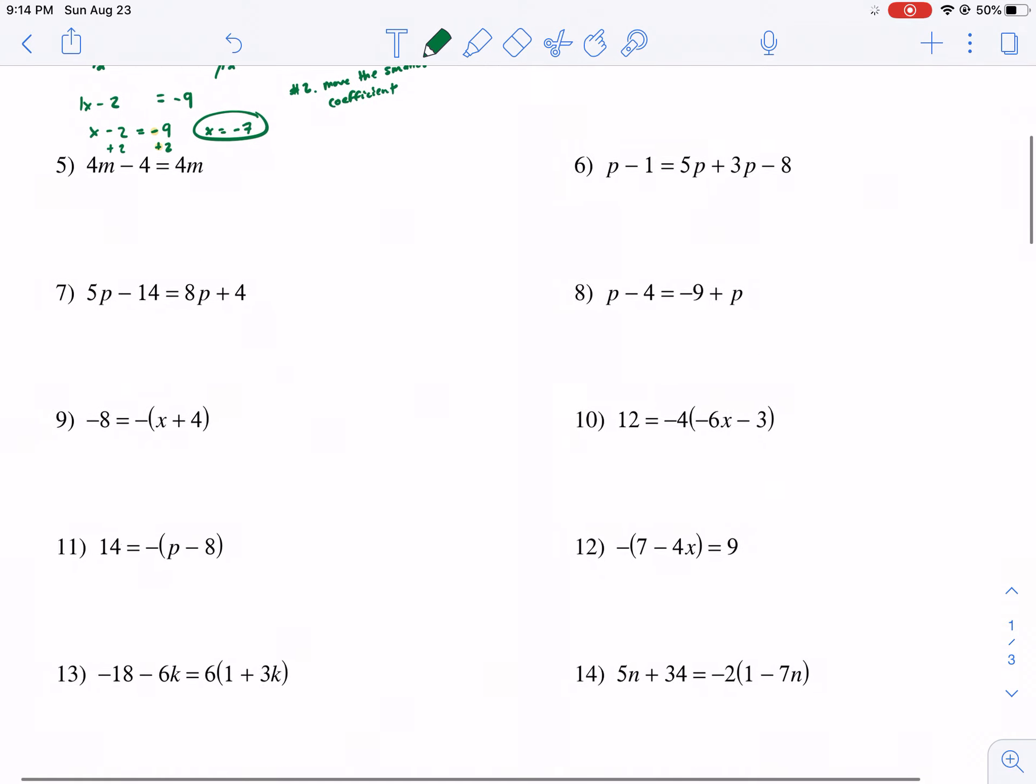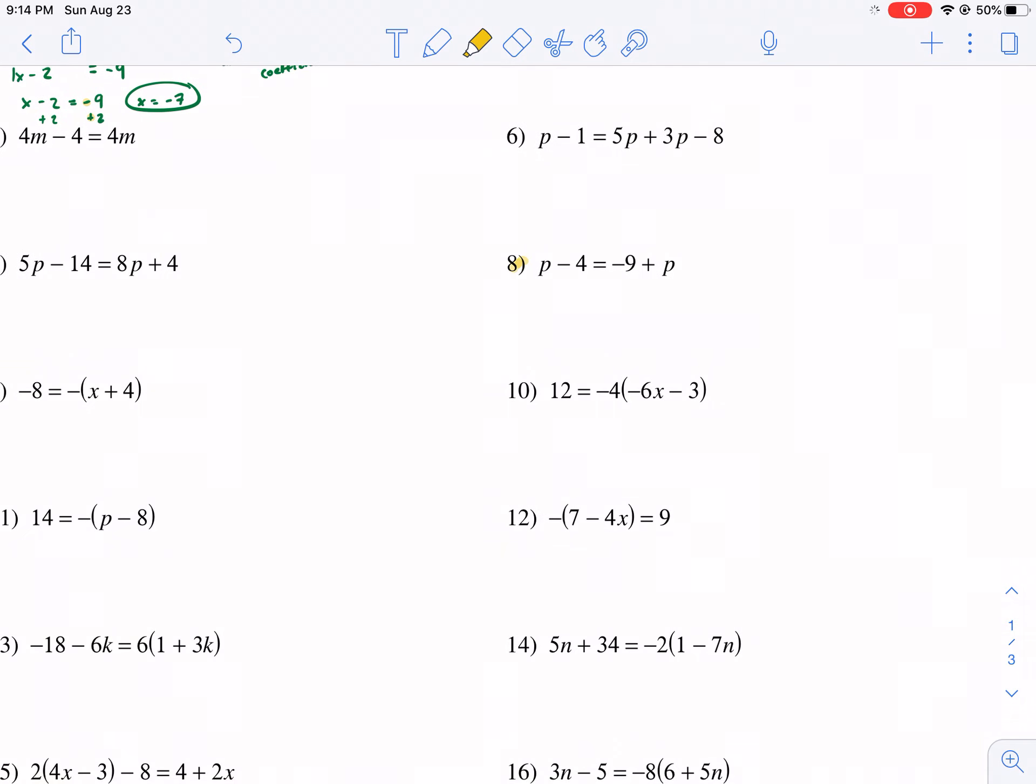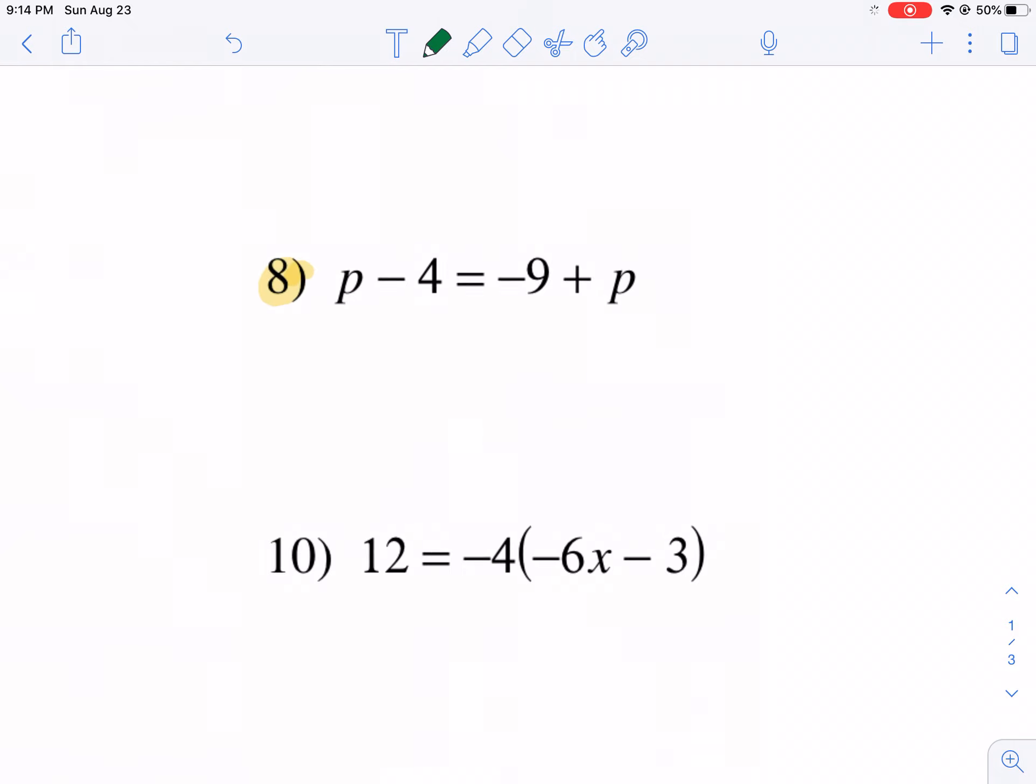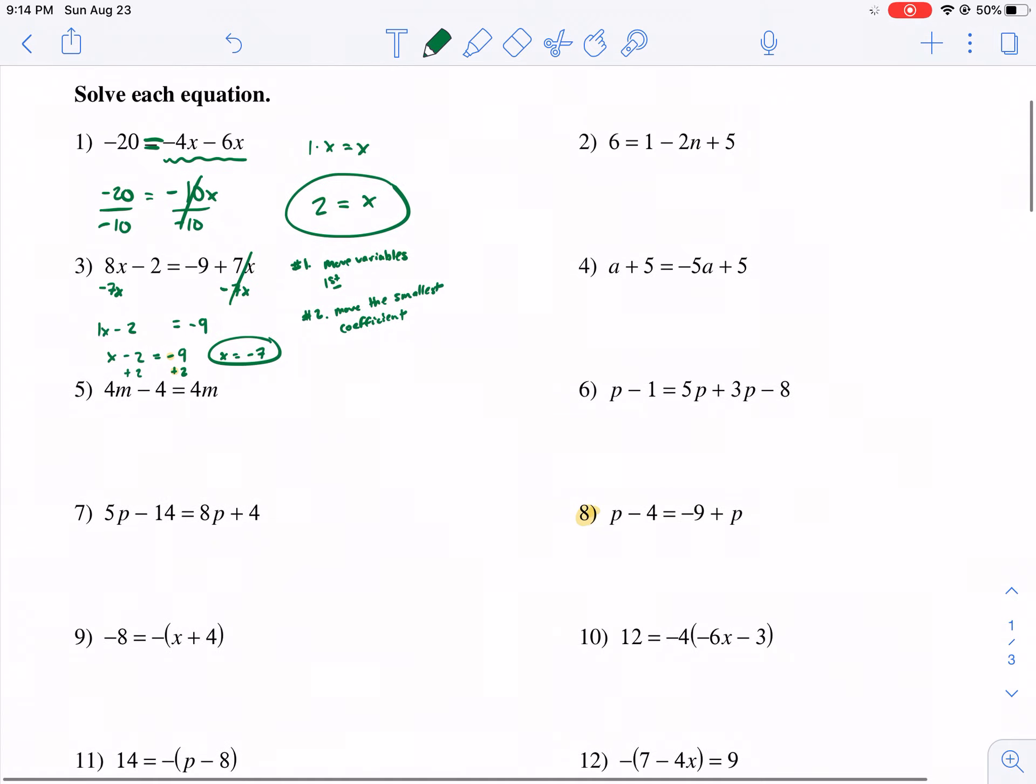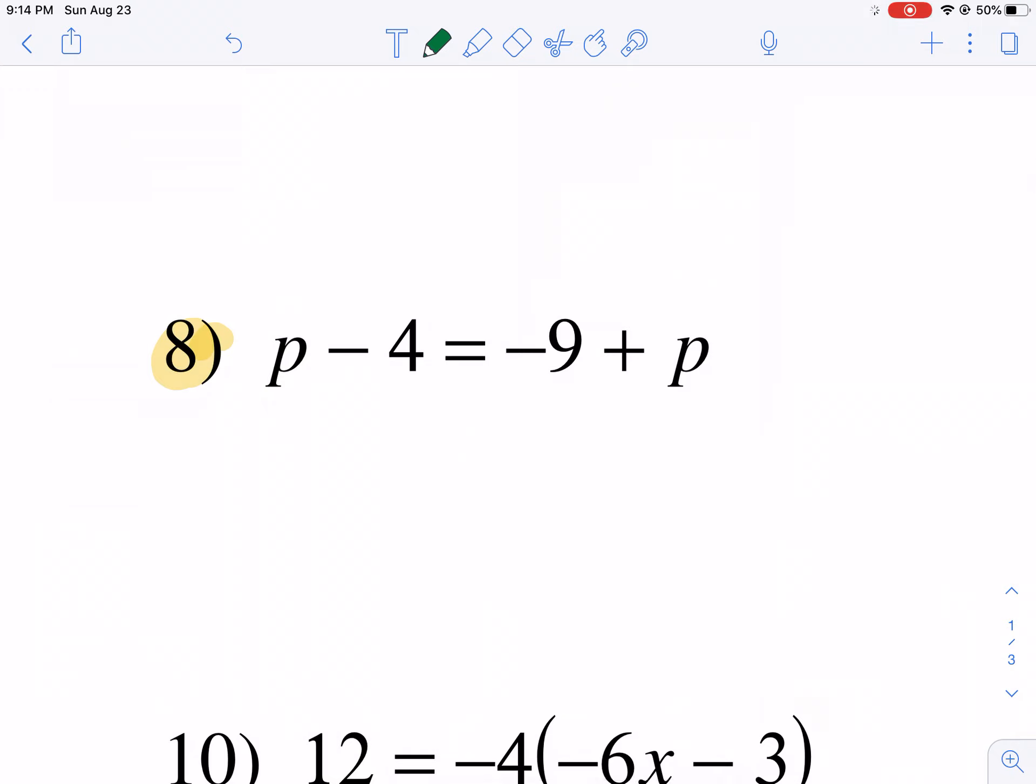Let's get down to a little bit more difficult. So we did 1, 3. Let's jump down to number 8. We have p minus 4 equals negative 9 plus p. Like we said, or like I said earlier, and like we should do, we have two variables on either side, so we're going to move these first. They have the same coefficient, so let's see what happens here. We're going to subtract p from both sides. And what happens? This cancels out. This cancels out. We're left with negative 4 equals negative 9.